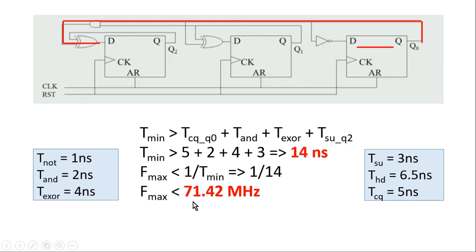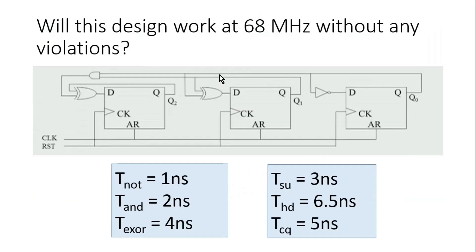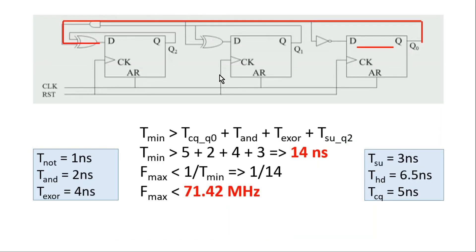The frequency of operation must always be less than 71.42 megahertz. If the applied frequency is less than 71.42 MHz, there will be no setup violation and the design will work correctly. Since 68 megahertz is less than 71.42 megahertz, this design will definitely work at 68 megahertz.